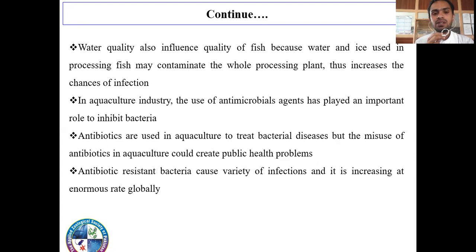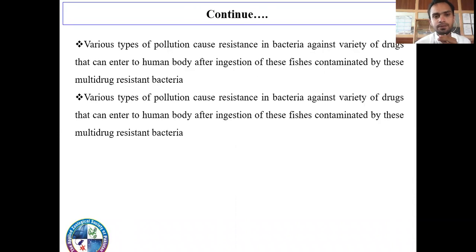In the aquaculture industry, the use of antimicrobial agents has played an important role in inhibiting bacteria. Antibiotics are used in aquaculture to treat bacterial diseases, but the misuse of antibiotics in aquaculture could create public health problems. Antibiotic-resistant bacteria cause a variety of infections and the rate is increasing enormously globally. Various types of pollution cause resistance in bacteria against a variety of drugs that can enter the human body after ingestion of species contaminated by these multidrug-resistant bacteria.